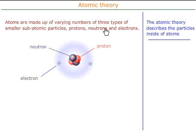They are very small. In actual fact, the protons and neutrons, although they are shown here very large, only occupy around about a 100,000th of the volume of the total of the atom.